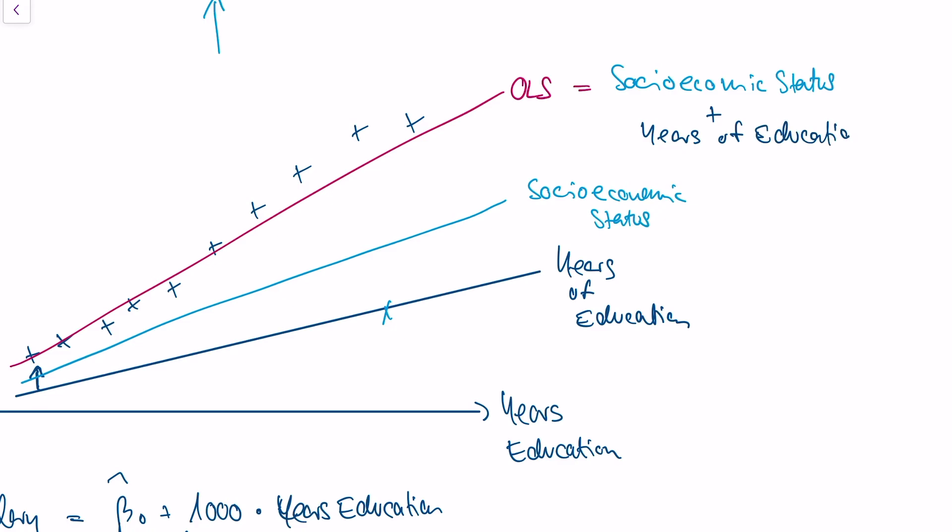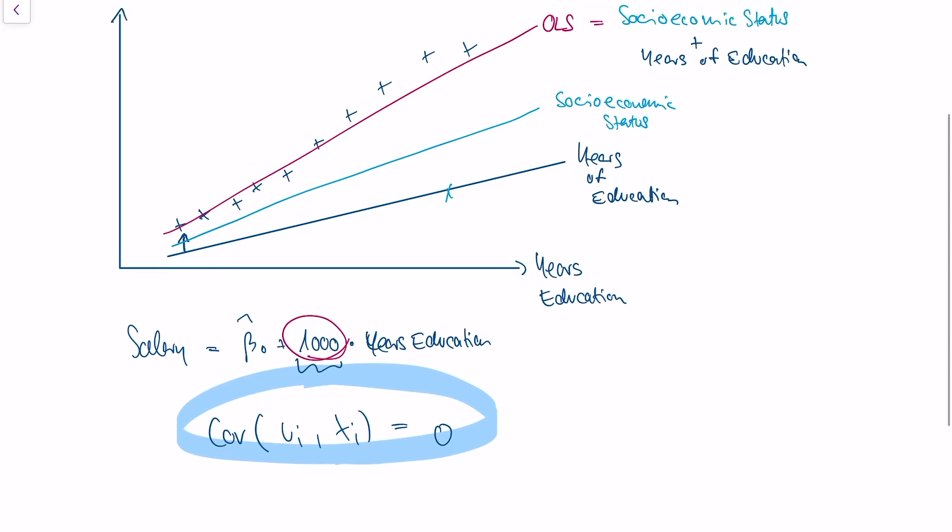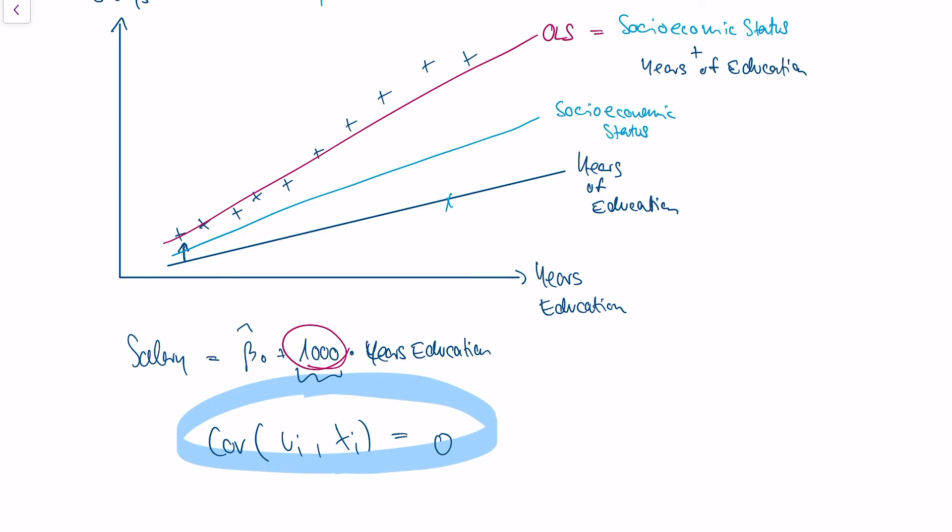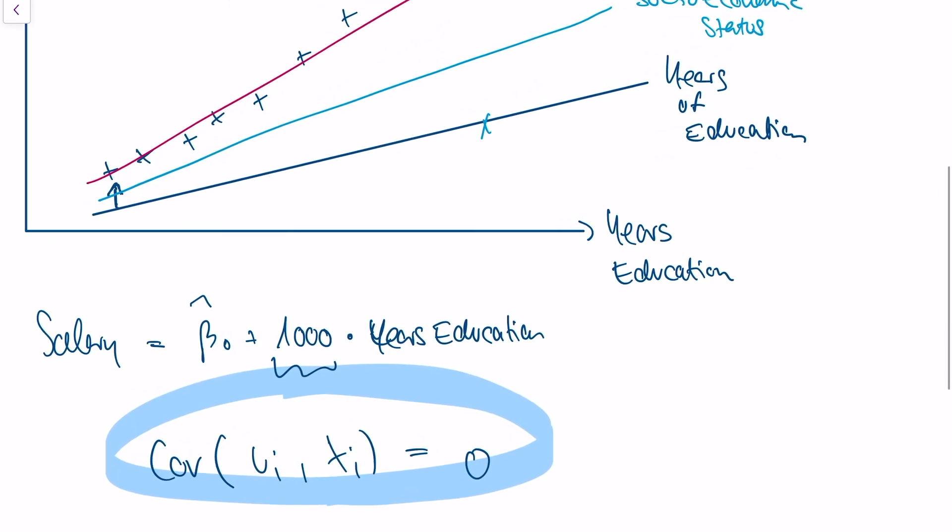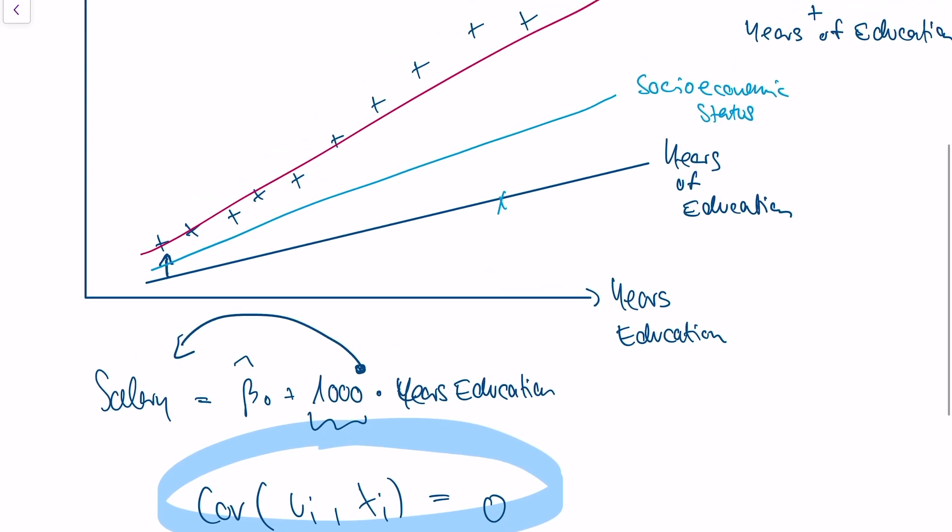So in other words, saying that our estimate of a thousand euros means that another year of education actually adds a thousand euros to my salary is wrong. Because the thousand euros, the effect comes from years of education and better socioeconomic status. In other words, we can't say that this number is a causal and intelligent estimation of the effect of years of education, because it also includes the socioeconomic status.